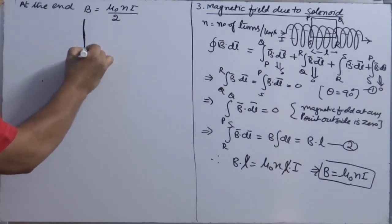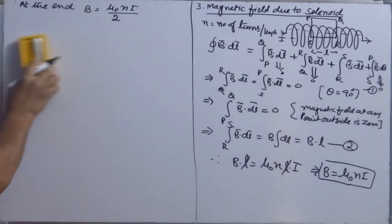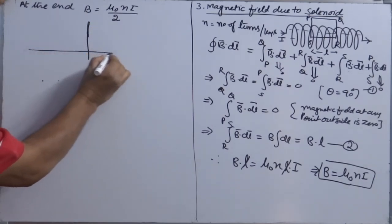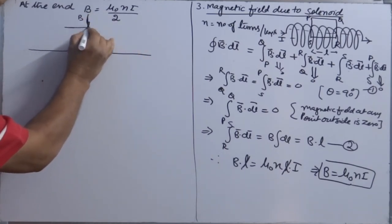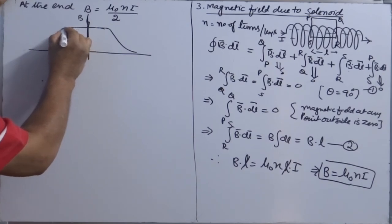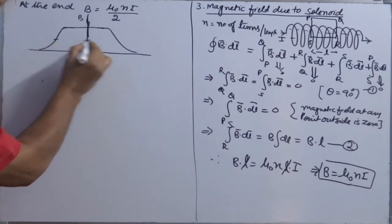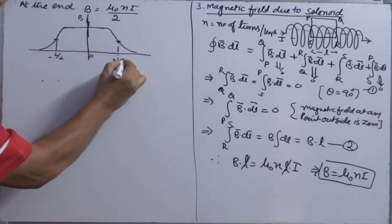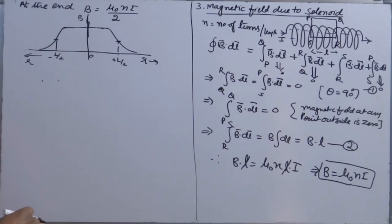If you plot a graph between magnetic field and position along the solenoid, the graph shows that B is roughly constant in the middle (center) and drops at the two ends — at positions -L/2 and +L/2 on either side.